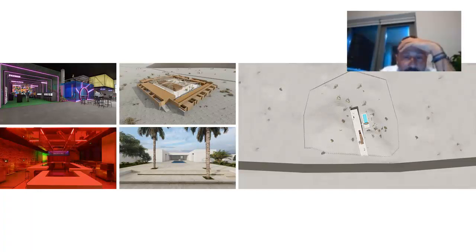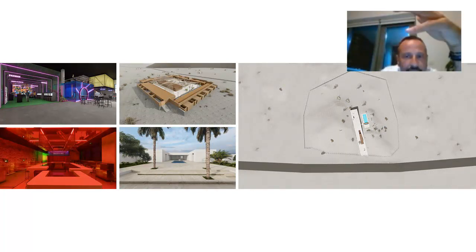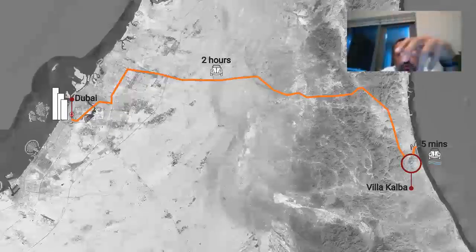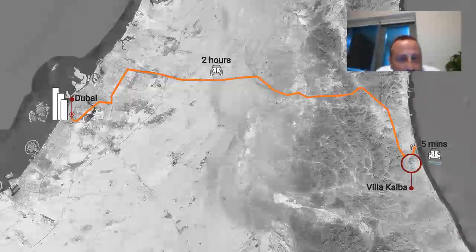We are currently trying to answer this question through five different projects spanning leisure, campsite, and residential villas. In each project we interpret the site condition through a specific architectural response. Today we will present Villa Kalba as one of those responses. Kalba is a two-hour drive from Dubai along the highway from the Arabian Sea toward the border of Oman. One directly feels the difference in scale when leaving a forest of skyscrapers in Dubai to be welcomed into the mighty and endless void of the desert of Kalba.